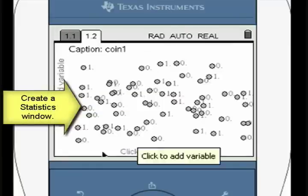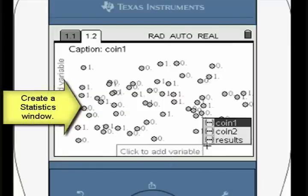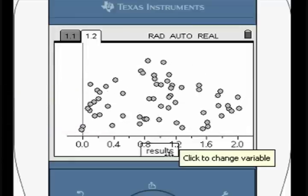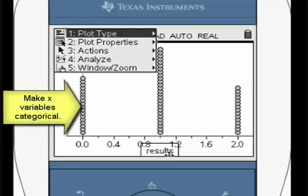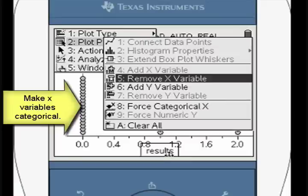Create a statistics window. Move the pointer to the horizontal axis and select the list heading from the third column. Change X to a categorical variable and select the bar graph option.